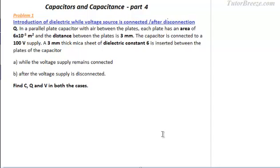We will be discussing a few problems from capacitors and capacitance. The first problem asks: what difference does it make if the dielectric is introduced while the voltage supply remains connected, or after it is disconnected? In a parallel plate capacitor with air between the plates, the plate area and distance between the plates are given, and the capacitor is connected to a 100V supply. A 3mm thick mica sheet of dielectric constant 6 is inserted. We have to find C, Q, and V in both cases.